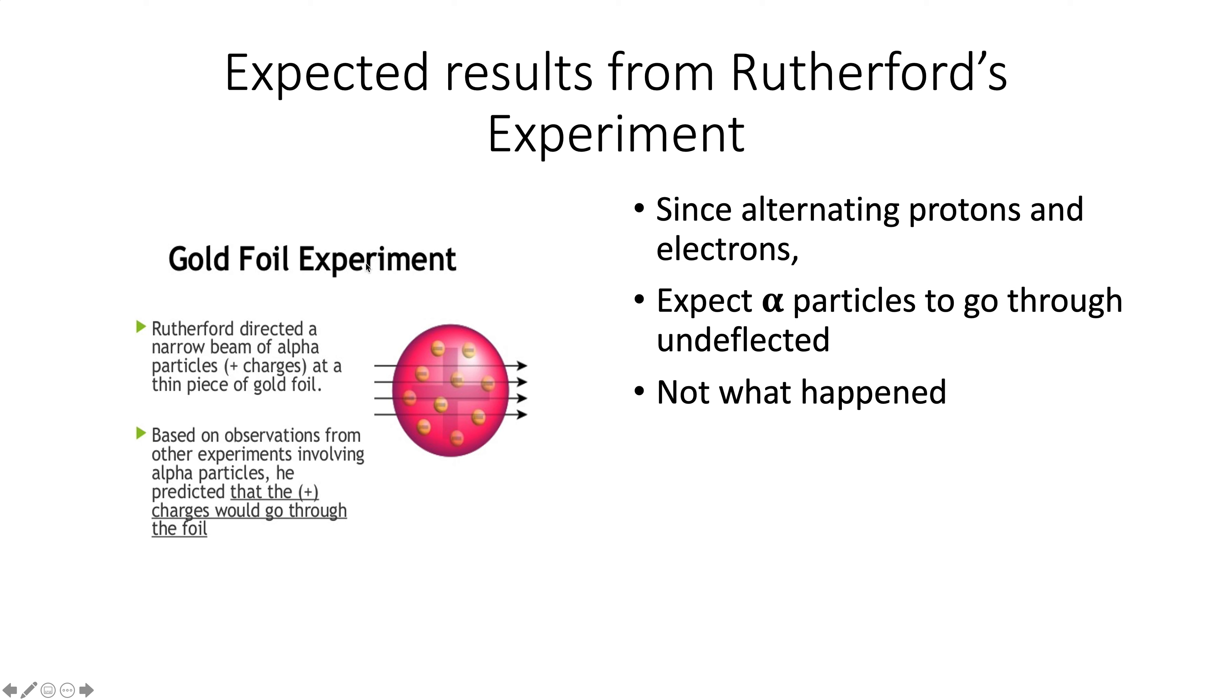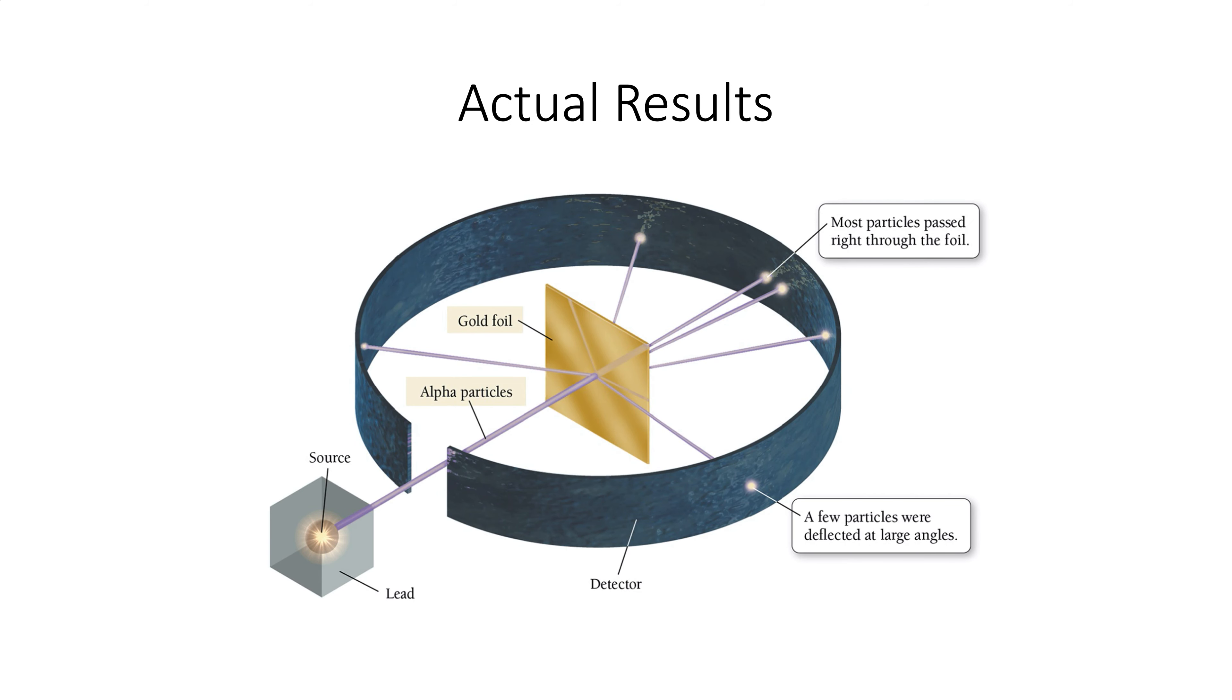And this is the hypothesis. If the model is correct, this is what should happen. Now let's see what really did happen. So this is the actual result. So there's the alpha particles, and you can see most of them did what we thought, but some bounced at large angles, which was unexpected, and some even bounced back.